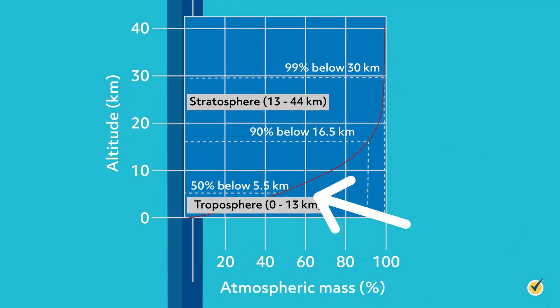In this image, we see that 50% of the atmospheric gases exist within 5.5 kilometers and 90% within the first 16.5 kilometers. Above that, gases become very thin and due to less available oxygen, it becomes harder to breathe.